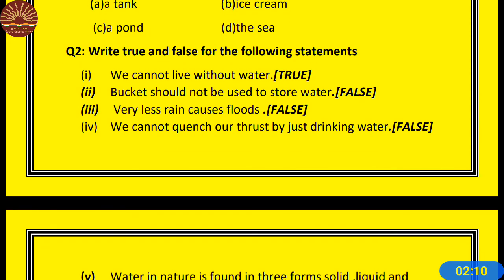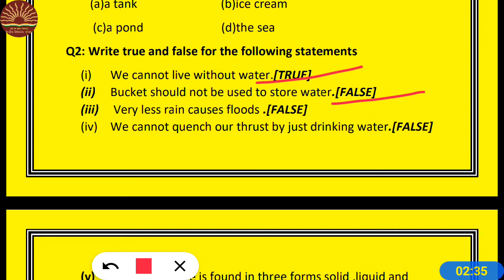Now question number 2: Write true or false for the following statements. Number 1: We cannot live without water — True. We need water for drinking and for various activities; the most important is drinking. Number 2: Bucket should not be used to store water — False, we need a bucket to store water. Number 3: Very less rain causes floods — False, because heavy rains cause floods and very less rain causes drought.